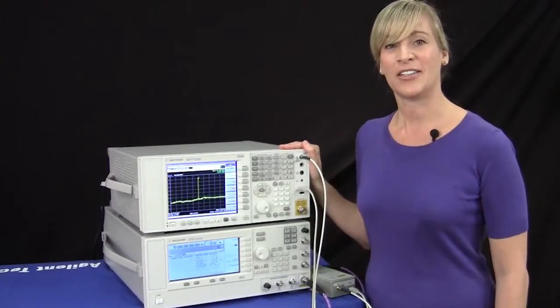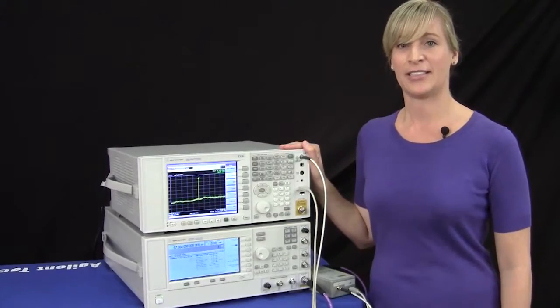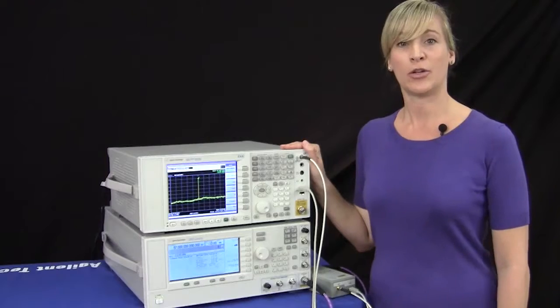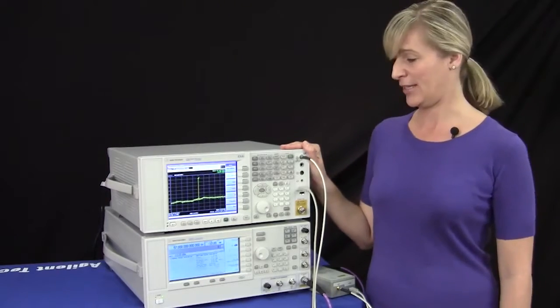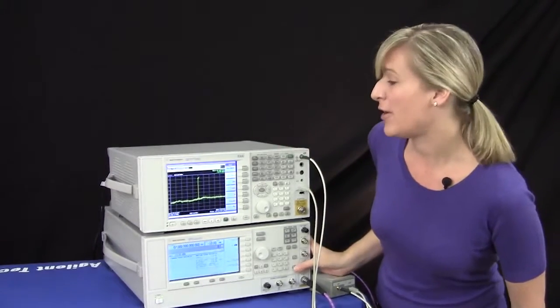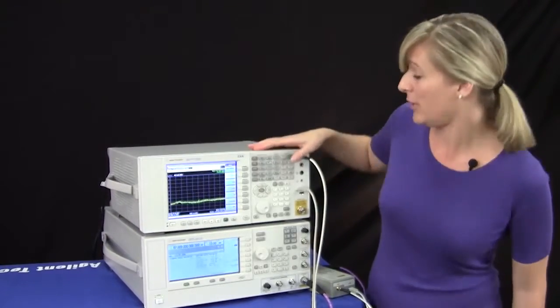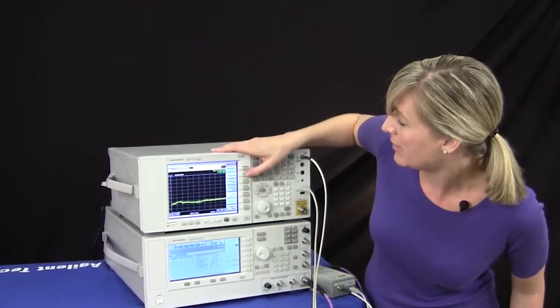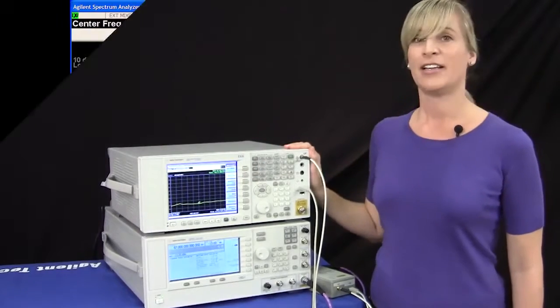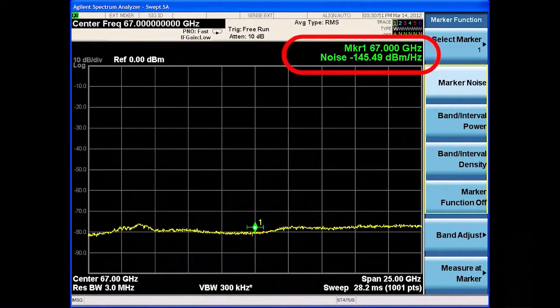I've centered our signal at 67 gigahertz and now let's take a look at the noise floor performance at this frequency. I'll turn the RF off and then I'll place a noise marker at 67 gigahertz, and as you can see we're showing a noise floor reading of negative 145 dBm per hertz at 67 gigahertz.